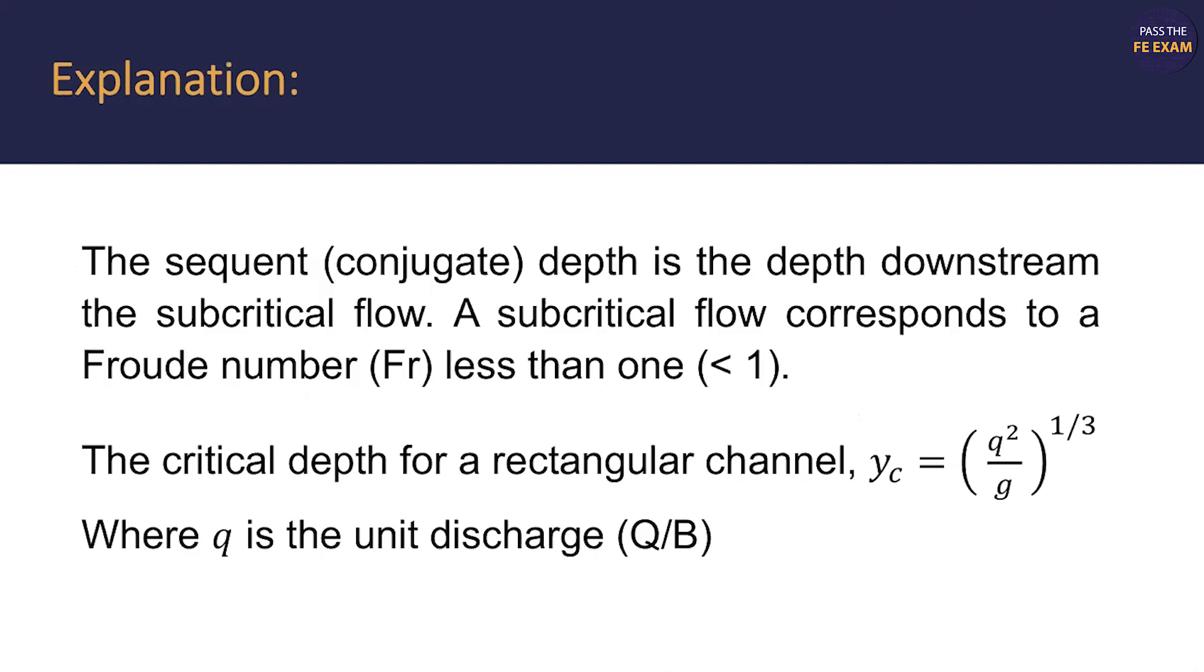Now, for an explanation, the sequent or conjugate depth is the depth downstream the subcritical flow. A subcritical flow corresponds to a Froude number, known as FR, less than 1.